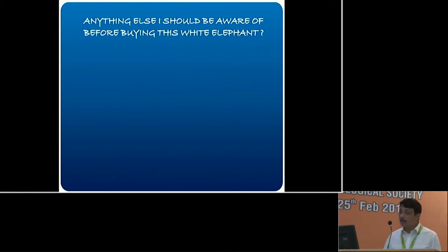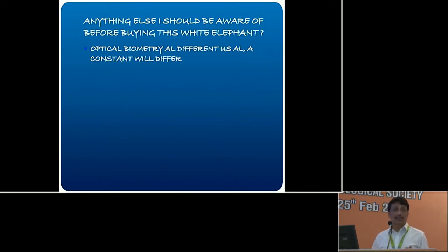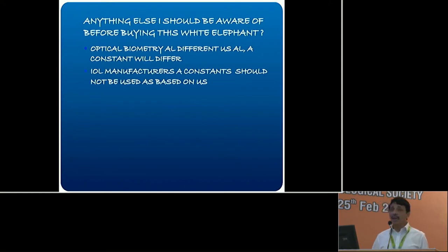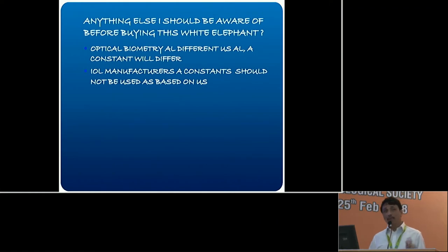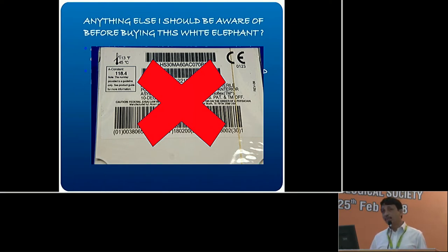Anything else to be aware of before buying this? Optical biometry axial length is different from ultrasonic axial length, so the A-constant will differ. Remember that the IOL manufacturer's A-constant should not be used as-is, since it is based on ultrasound. If you do optical biometry, the A-constant changes from what is written on the IOL box — for example, 118.4 on the box is calculated on ultrasound, and with optical biometry, that changes. You cannot use the same IOL power.